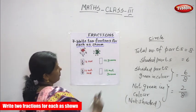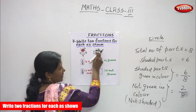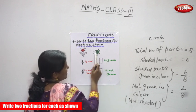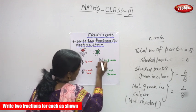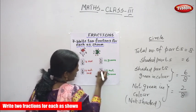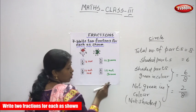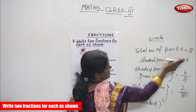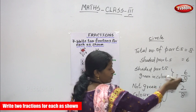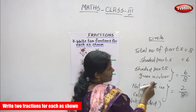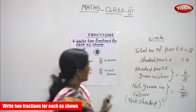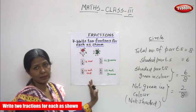This is a circle. I cut it into 8 equal parts, but I shaded only 6 parts. As green in color: 6 by 8. Not green in color — the remaining parts 1 and 2 — so 2 by 8 is not green in color. Total number of parts is 8, shaded parts is 6. Fraction in green: 6 by 8. Fraction not in green, that means not shaded parts: 2 by 8. I think you understand these two questions very clearly. Thank you.